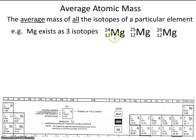So these three magnesium atoms are all isotopes of one another. They're the same in every respect, except they have a different number of neutrons.